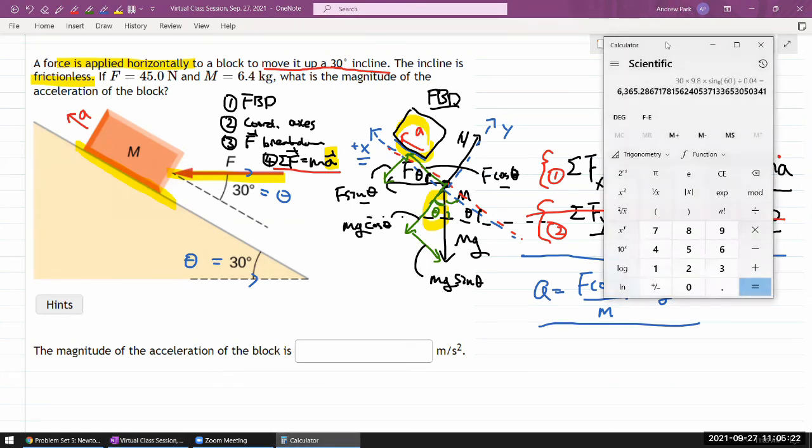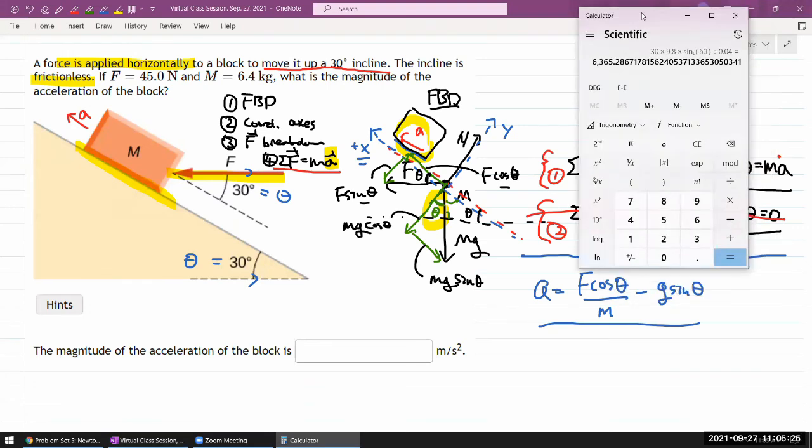Let me plug in the numbers here, since we did get a question. 45 times cosine of theta, 30 degrees, divided by the mass, 6.4, minus - and my calculator does take care of the order of operations - G, 9.8 times sine of 30 degrees. That equals 1.189, so 1.19 meter per second squared.